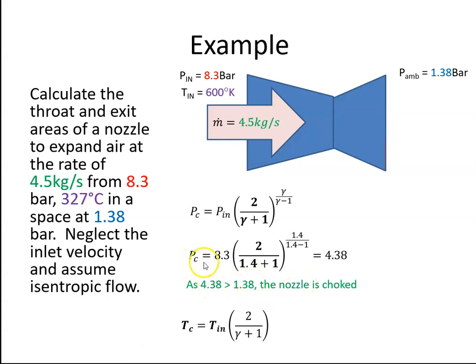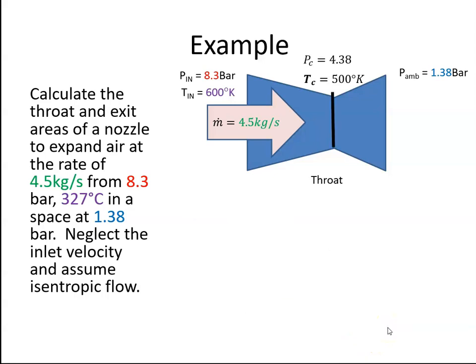So if we have the critical pressure, we also have the critical temperature. And the critical temperature is just the same formula, except we don't have the power of gamma over gamma minus 1. And when we plug in the values, we get the critical temperature to be 500 degrees Kelvin. So we have 600 at the input and gamma, we've assumed to be 1.4.